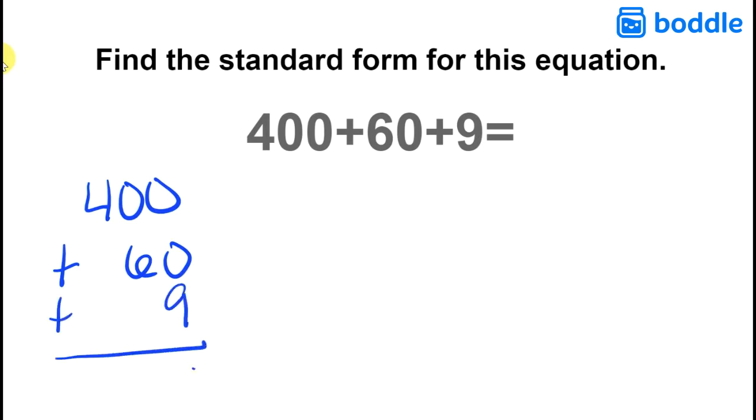0 plus 0 plus 9 is 9. 0 plus 6 is 6. 4 plus 0 is 4 and we get 469.